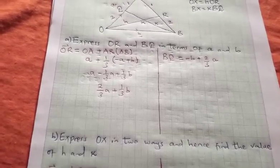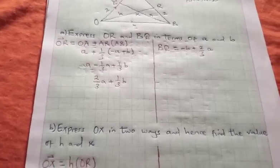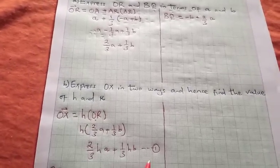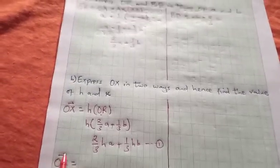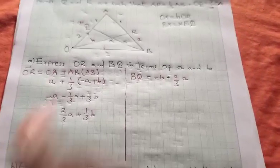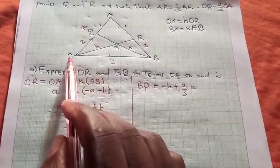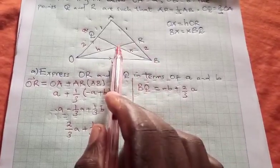So this is our first equation. Now the second equation, OX, we can write OX in another way. Let us go back to our diagram. OX, for us to reach at point X, we can decide to move from O to B and then from B to X.